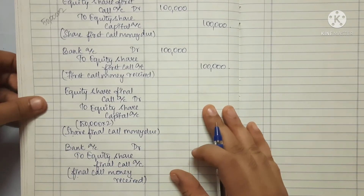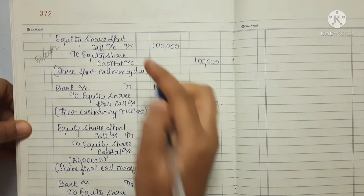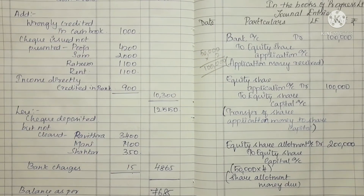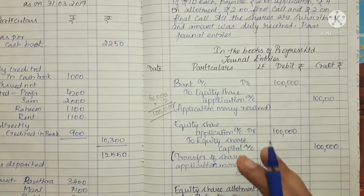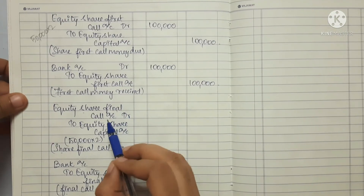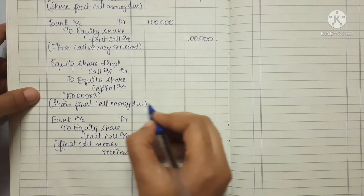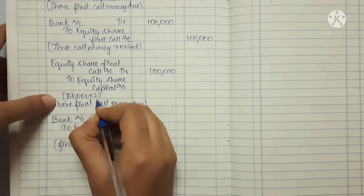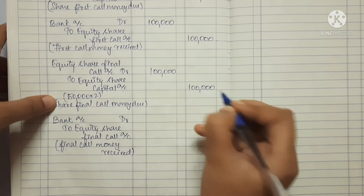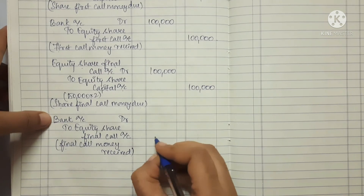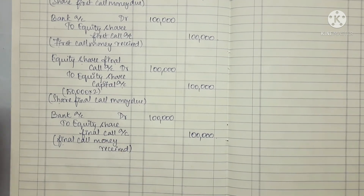For the final call — the last installment — entry: Equity Share Final Call Account debit to Equity Share Capital credit. Amount due in the journal. On receipt of final call money: Bank Account debit to Equity Share Final Call Account credit. Final call is 2 rupees; 50,000 multiplied by 2 equals 1 lakh.